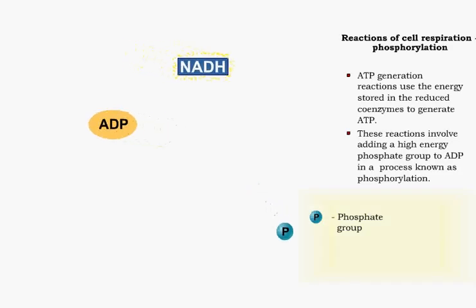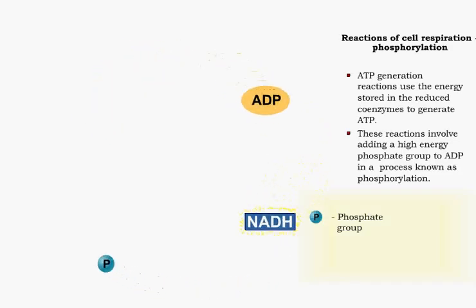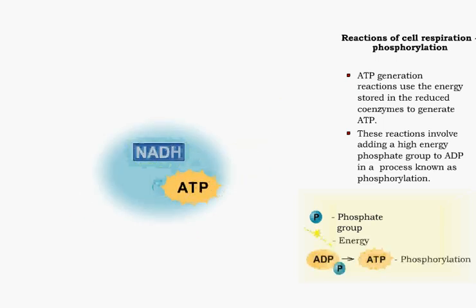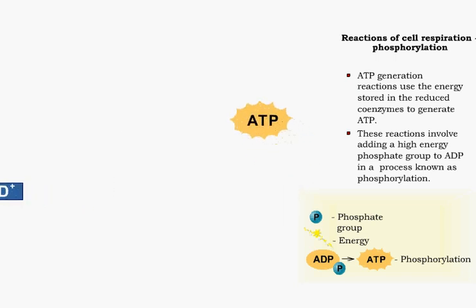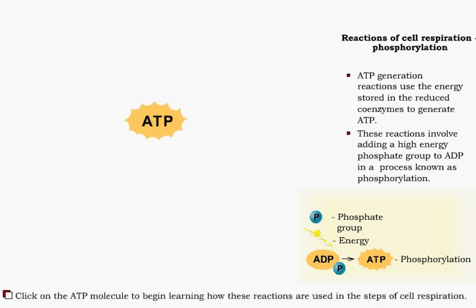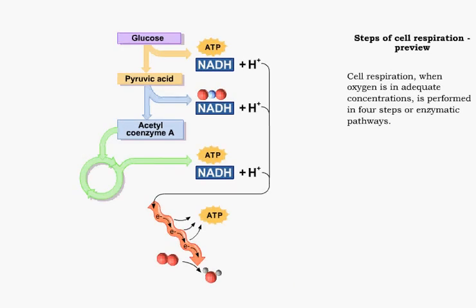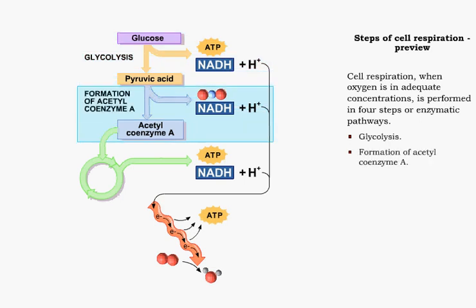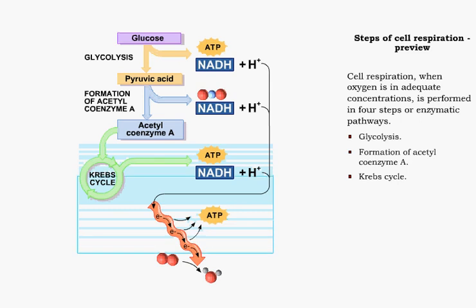The energy in reduced coenzymes is used to generate ATP molecules. The generation of ATP for use by cells involves four pathways. These are glycolysis, formation of acetyl coenzyme A, the Krebs cycle, and the electron transport chain.